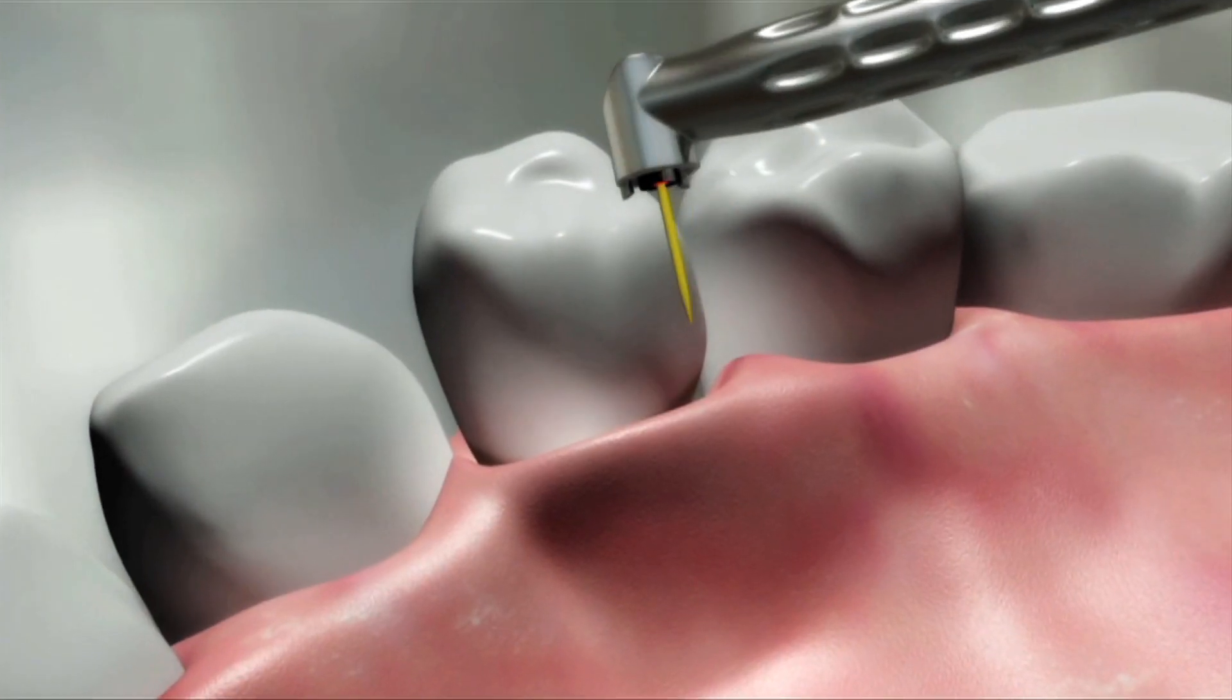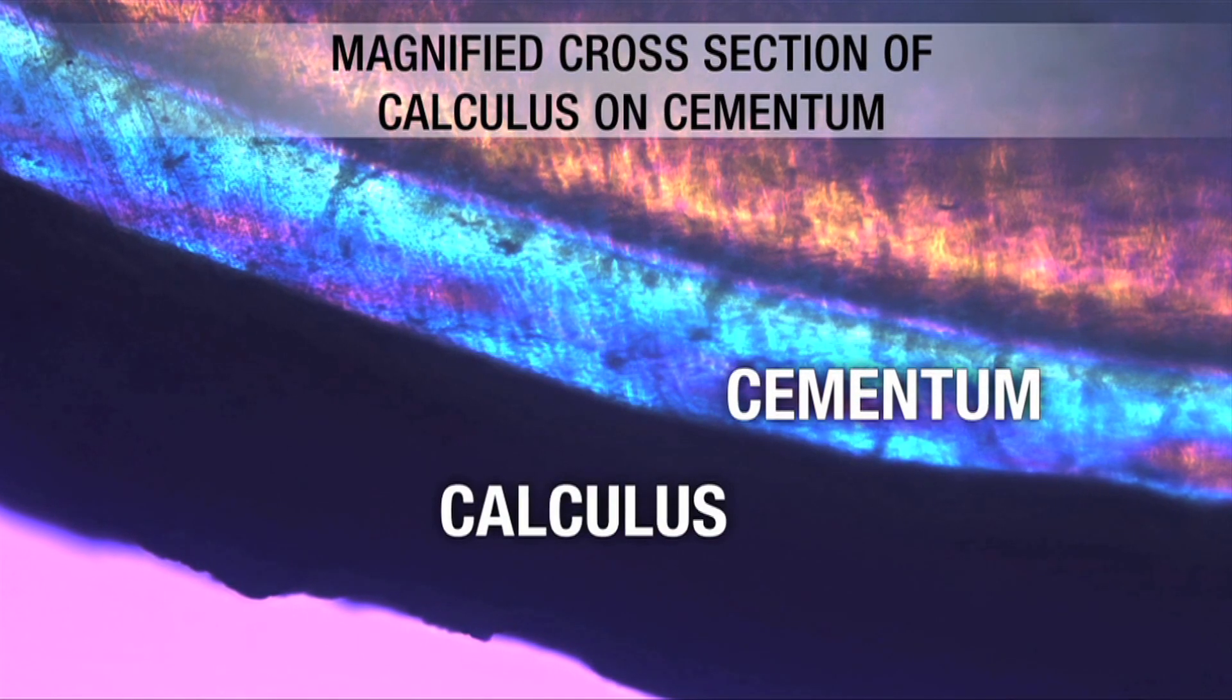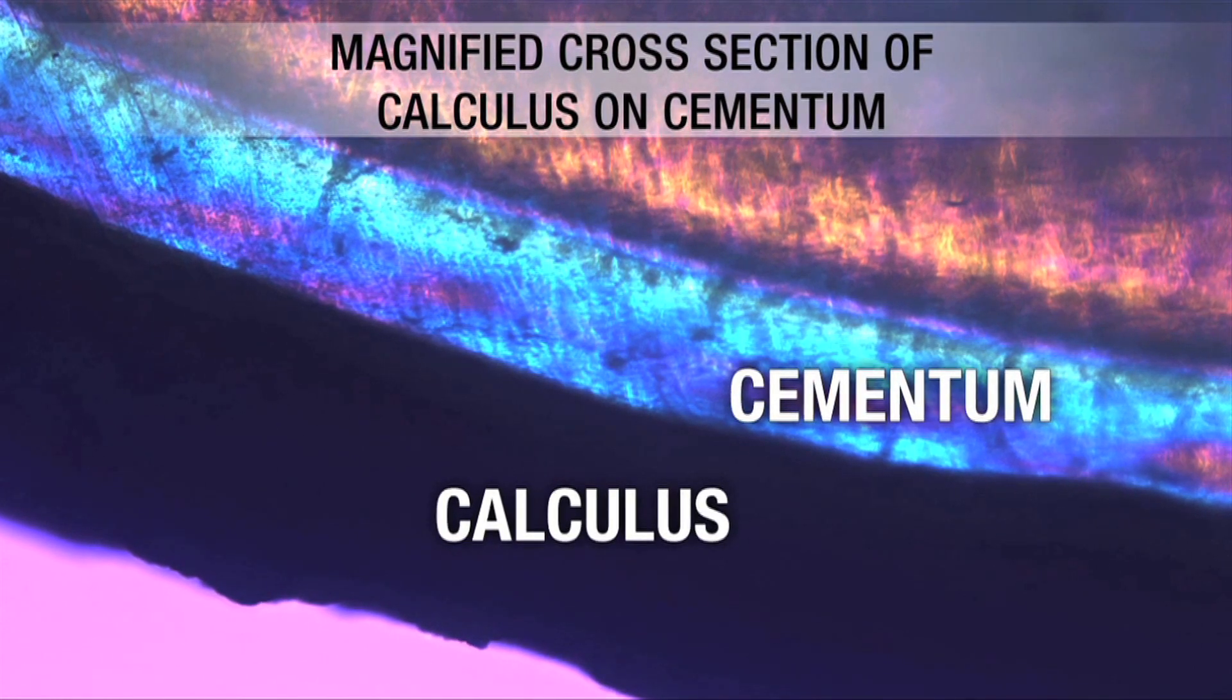Next, we insert a specialized Erbium YAG handpiece tip with water spray into the pocket to remove calculus at sub-ablative laser energy. The special tip utilizes photon-induced photoacoustic streaming, or PIPs, to remove the calculus and disrupt the destructive biofilm on the root surface.